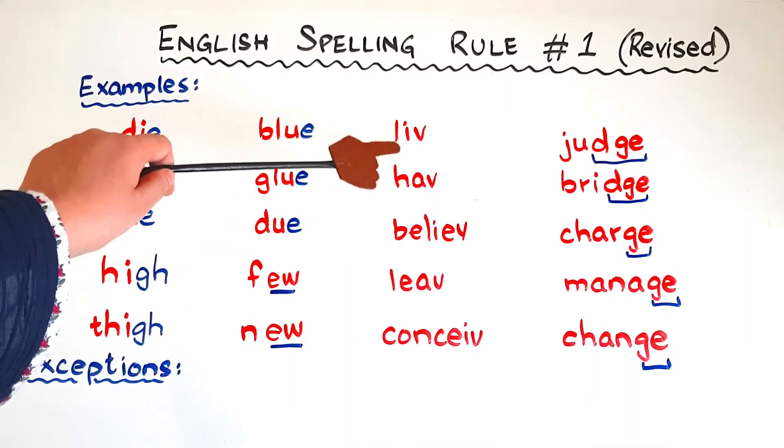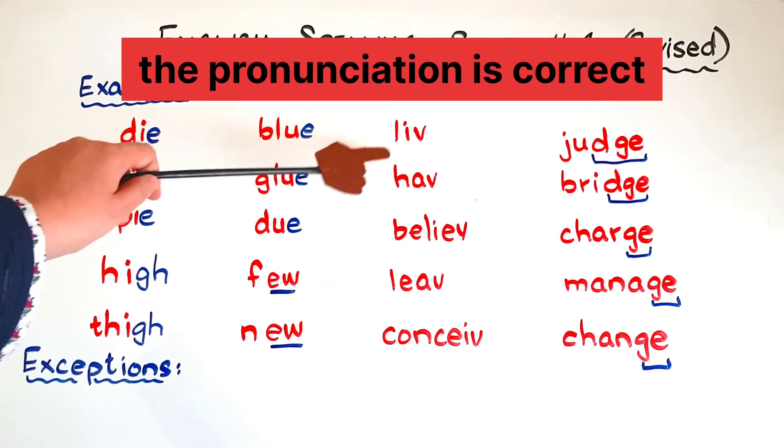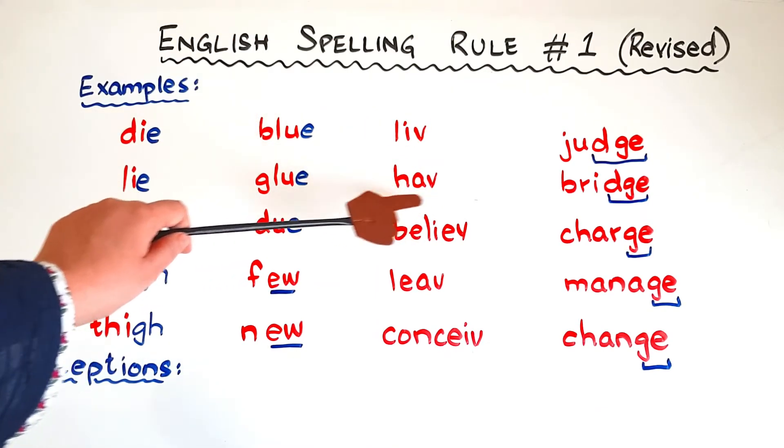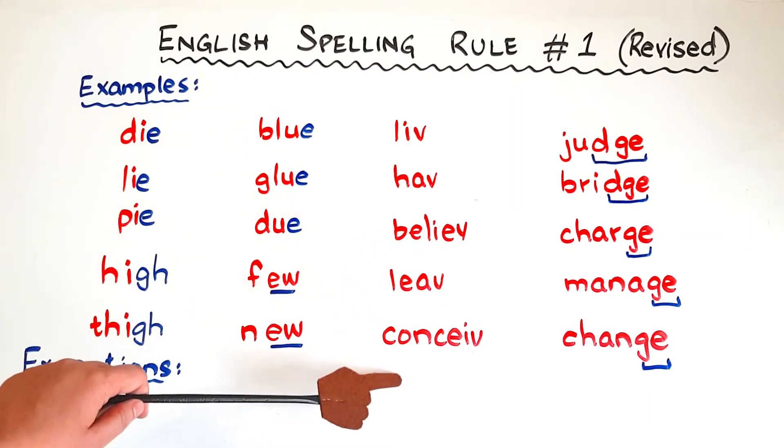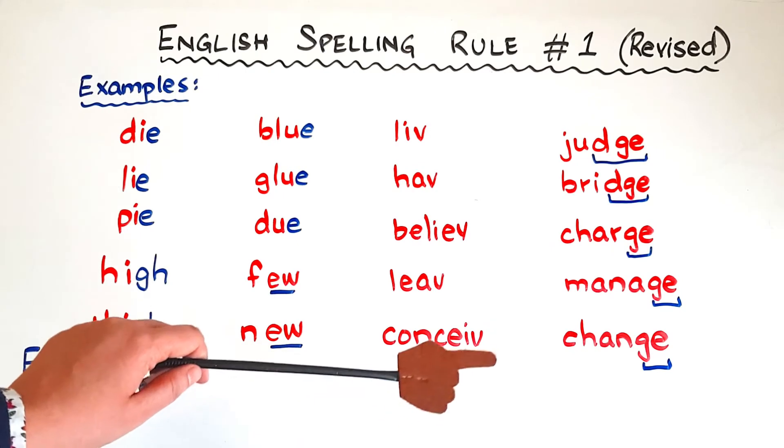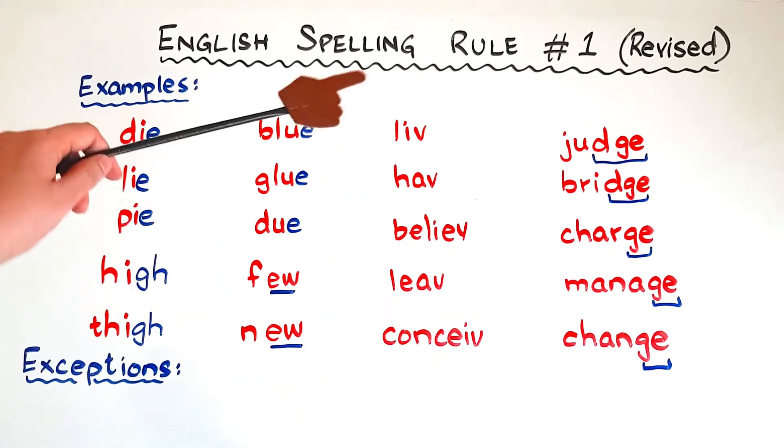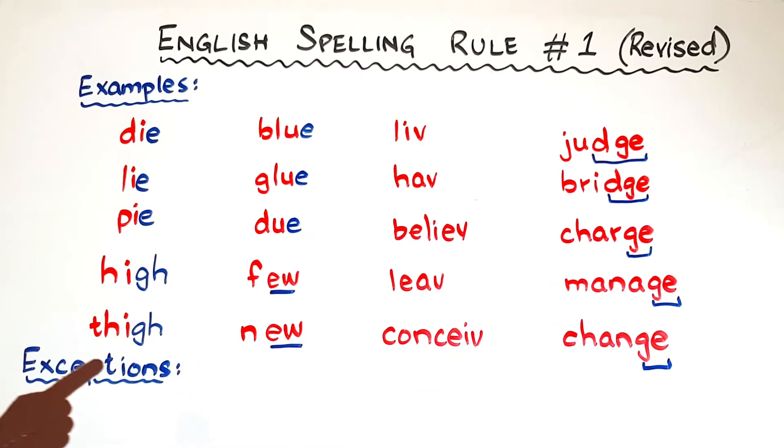The third letter is V. English words don't end in V. The spelling is correct. Live, have, believe, leave, conceive. So all of these words are ending at the V sound, letter V. However, the rule says that English words don't end in V. So we need to put a silent final E at the end. Here you are.